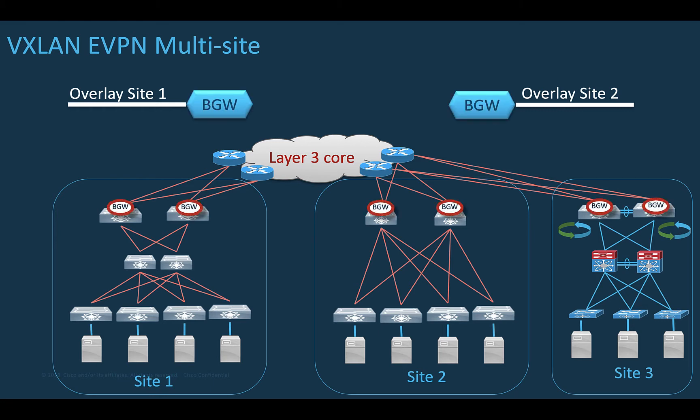The function of multi-site is achieved via the border gateways that are part of the VXLAN EVPN fabrics. In a leaf and spine data center fabric, it can be a leaf node or a pair of leaf nodes, a pair of spine nodes, or a separate device acting as a gateway to interconnect the sites. It can be up to six nodes per site. EVPN multi-site can be leveraged to extend networks across legacy data centers or a mix of legacy and modern fabric — so very flexible.